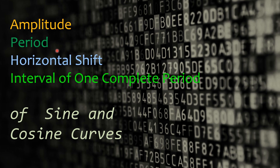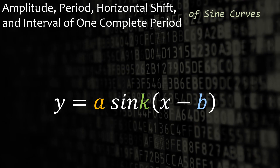Let's talk about the amplitude, period, horizontal shift, and interval of one complete period of the sine and cosine curves. When we talk about the amplitude, period, horizontal shift, and interval of one complete period of sine curves, then we are referring to this rule: y is equal to a sine k times x minus b. I have provided colors here to indicate importance later.